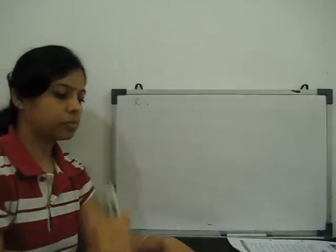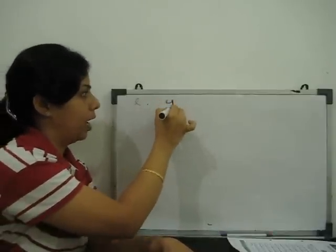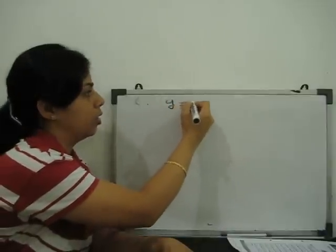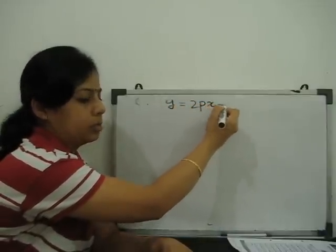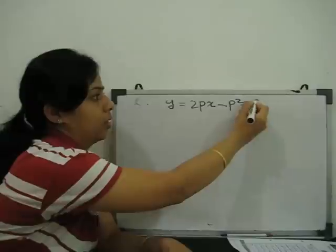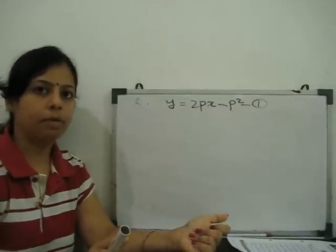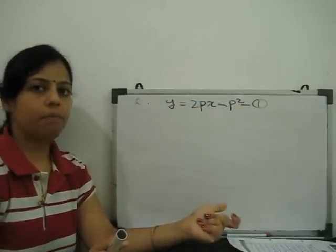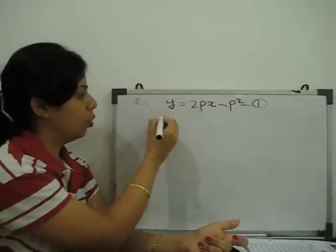Next question, if y is equal to 2px minus p square. This is y as a function of p and x. First step, differentiate with respect to x.